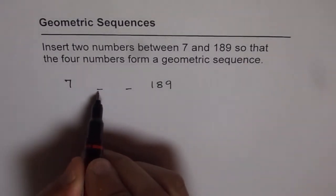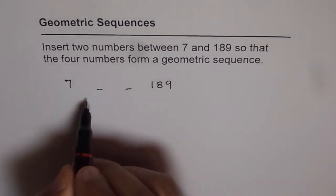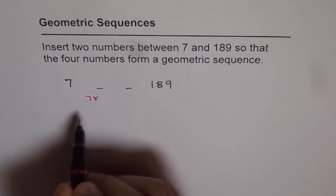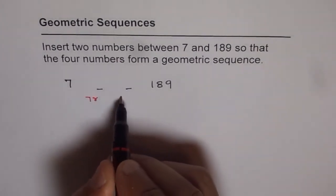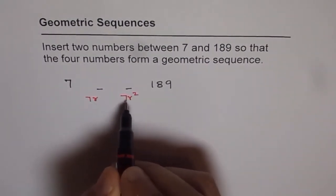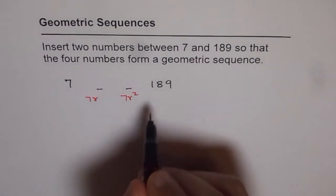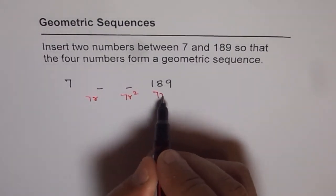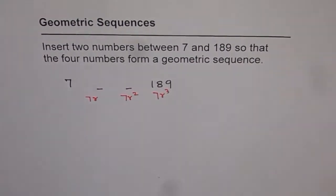That means if I have to get this number, the next to 7, it should be 7 times r. And then we should get 7 times r squared. That means we have to multiply by r each time. And the last number should be 7 times r cubed. That is what it means.